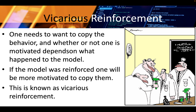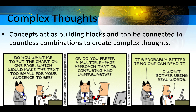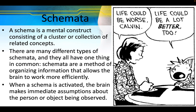Artificial concepts can enhance the understanding of a topic by building one on another. Concepts act as building blocks and can be connected in countless combinations to create complex thoughts. A schema is a mental construct consisting of a cluster or collection of related concepts. There are many different types of schemata, and they all have one thing in common: schemata are a method of organizing information that allows the brain to work more efficiently.